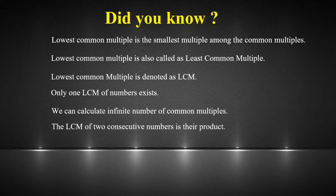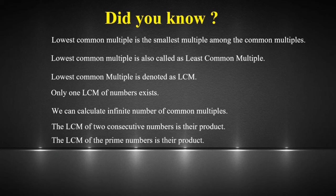Another fact: the LCM of two consecutive numbers is their product. For example, the LCM of 4 and 5 (consecutive numbers) is 4×5=20. Similarly, the LCM of 10 and 11 is 110, of 20 and 21 is 420, of 30 and 31 is 930. Also, the LCM of prime numbers is their product.